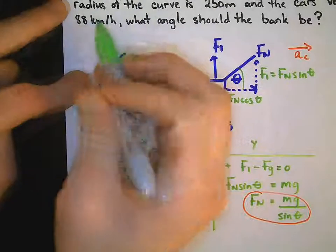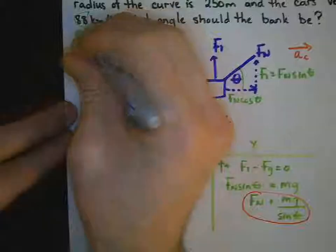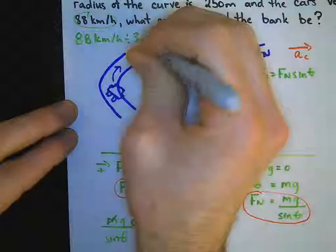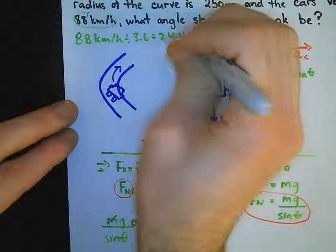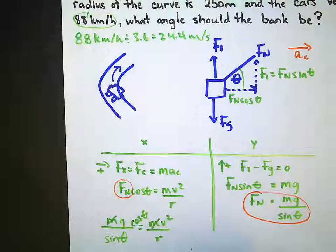In the question, we had 88 kilometers per hour. To convert from 88 kilometers per hour, we divide by 3.6 to get 24.4 SI units for speed meters per second. Back down here.